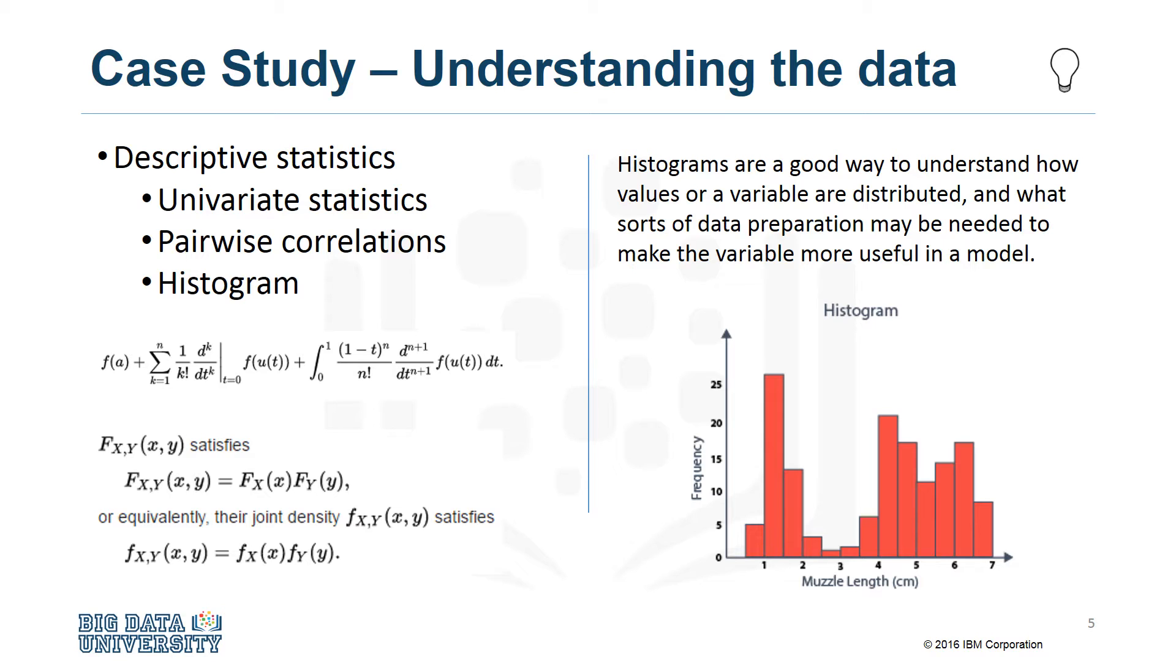First, these statistics included univariate statistics on each variable, such as mean, median, minimum, maximum, and standard deviation.